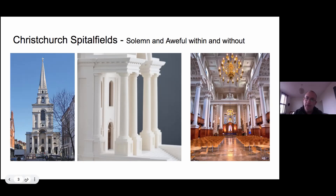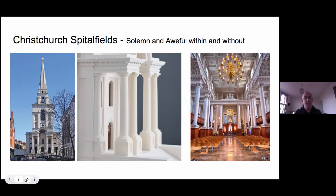It's built with massively thick walls and massively thick columns — a very sturdy-looking thing. Part of Hawksmoor's brief when building these churches was to make them look 'solemn and awful within and without,' essentially to make them look scary and imposing. Standing underneath it, the tower looks like it's leaning over you, and that's a deliberate effect he created to make the building look very imposing, which it does.